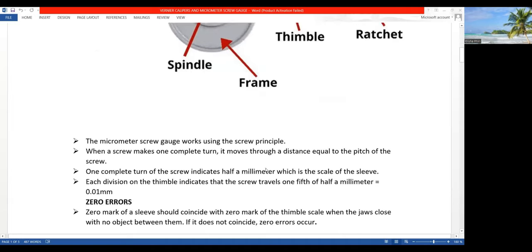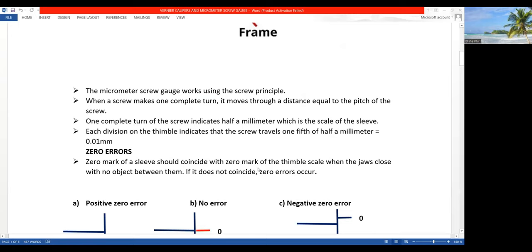So now, how does the micrometer screw gauge work? The micrometer screw gauge works using the screw principle. When a screw makes one complete turn, it moves through a distance equal to the pitch of the screw. One complete turn of the screw indicates half a millimeter, which is the scale on the sleeve.